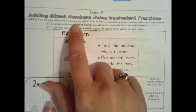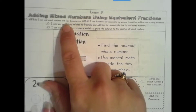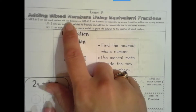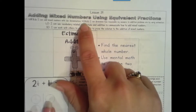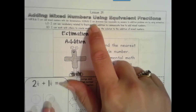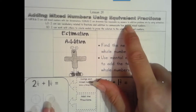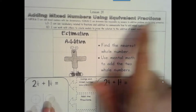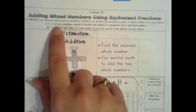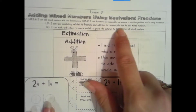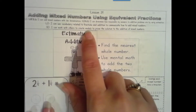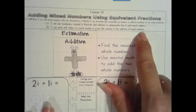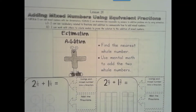Next year you'll deal with fractions that have unlike denominators — different numbers in the denominator — but right now we're focusing on like denominators. For Operations and Algebraic Thinking, I can determine how reasonable my answer to addition problems is by using estimation. Language Objective: I can use vocabulary related to fractions and addition to communicate how to add mixed numbers. Social Objective: I can work with others to create models to prove the solution to the addition of mixed numbers.